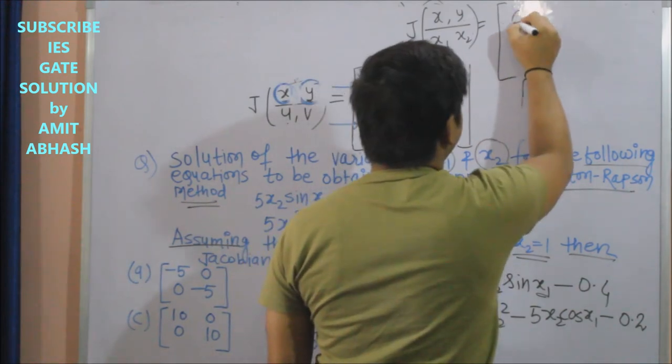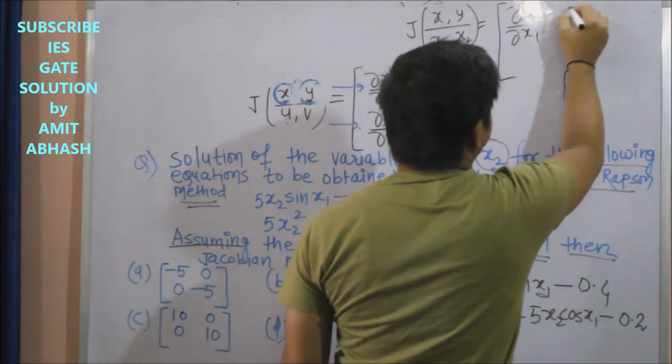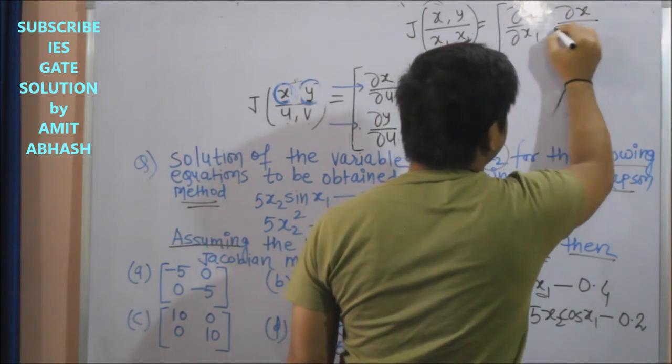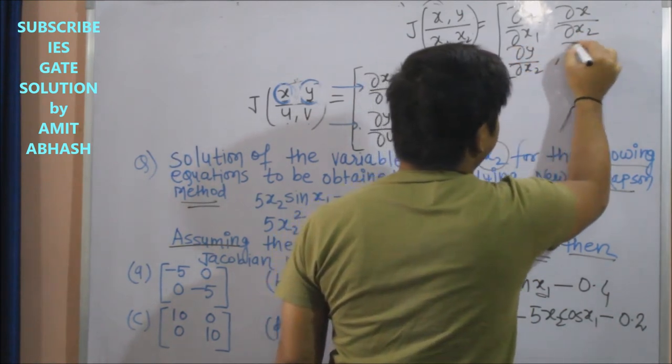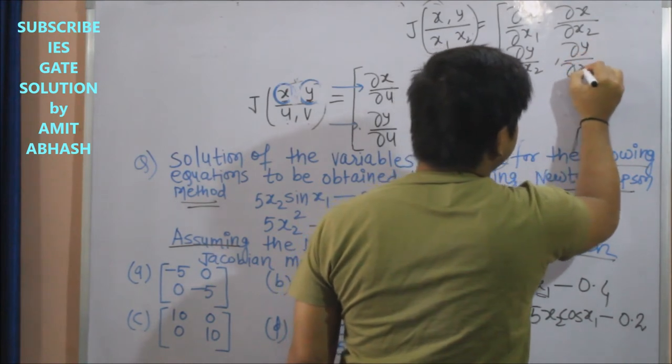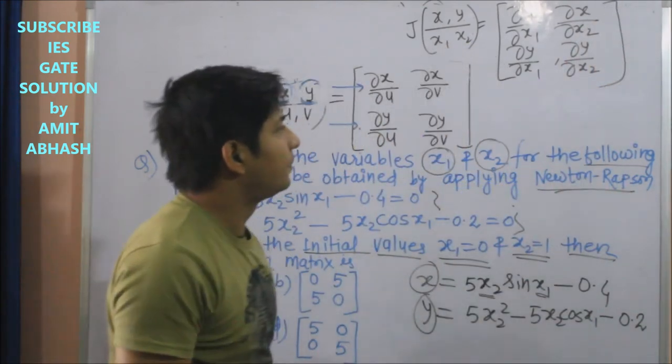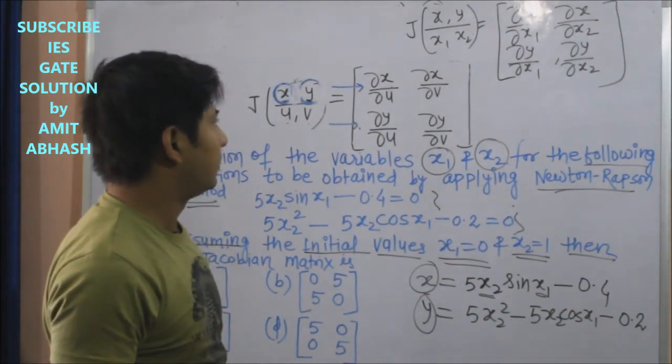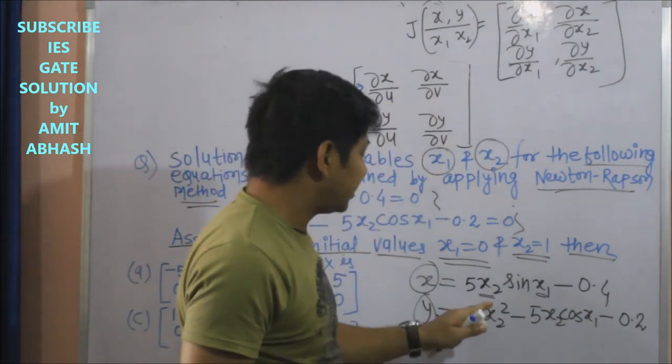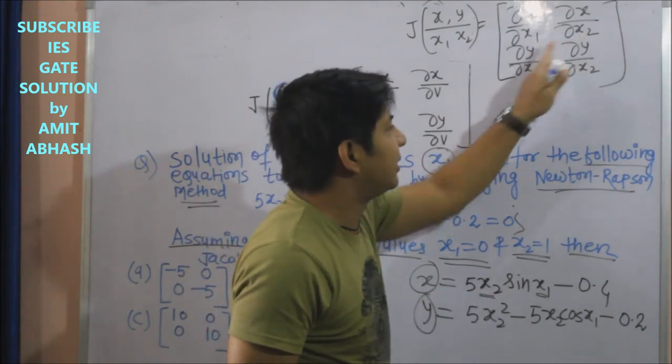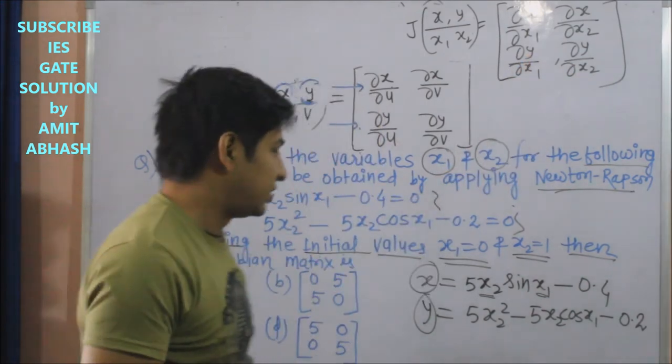Del y upon del x1 and del y upon del x2. x1 x2 ka variable chal raha hai, so it's at the bottom. Just like we did with u and v, similarly here we do with x1 and x2. x ko and y ko x1 se, and x2 se. Now we have to partially differentiate this.